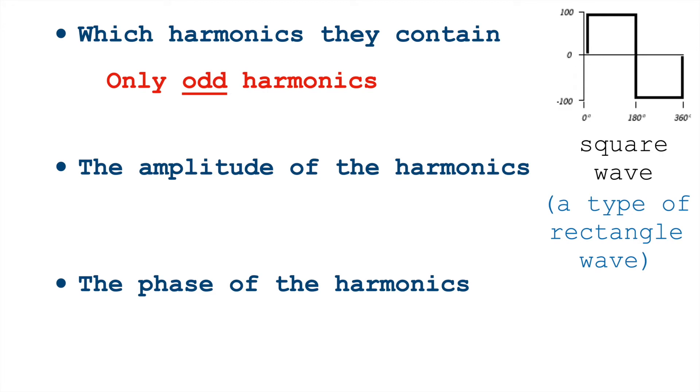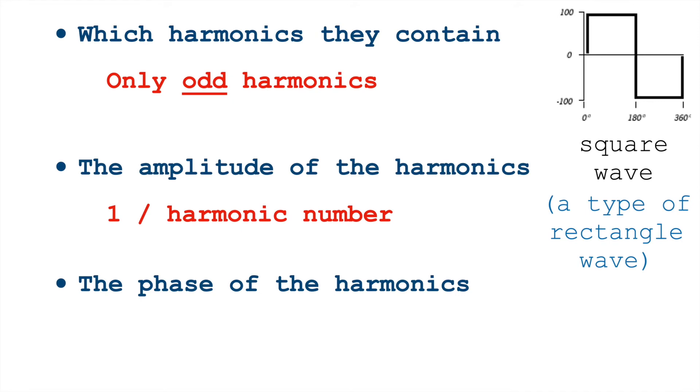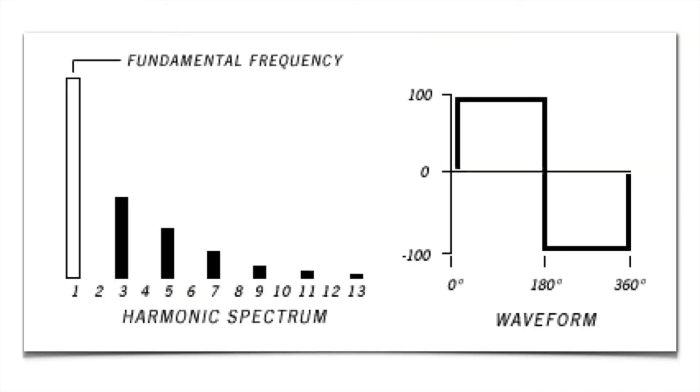The amplitude, though, is different. The amplitude of these harmonics is one over the harmonic number. Remember, the triangle was one over the harmonic number squared. But in a square wave, the amplitude of the third harmonic is one third of the fundamental, not one ninth, like the triangle.